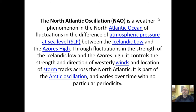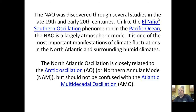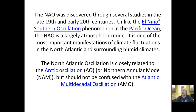The NAO was discovered through several studies in the late 19th and early 20th centuries. Unlike ENSO — the El Niño–Southern Oscillation phenomenon in the Pacific Ocean — the NAO is a largely atmospheric mode. With ENSO, it was not only the atmosphere but also what was going on with the ocean, like the fisheries example and the flow of the water.